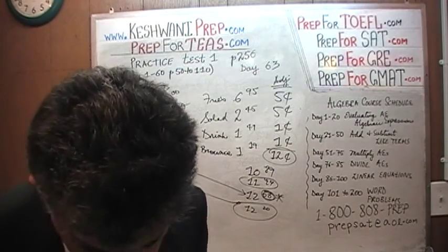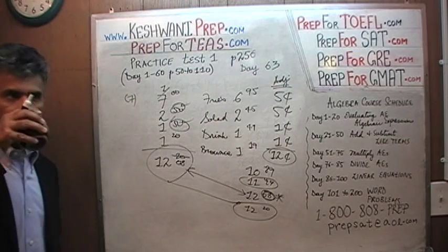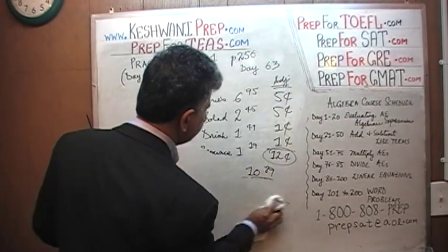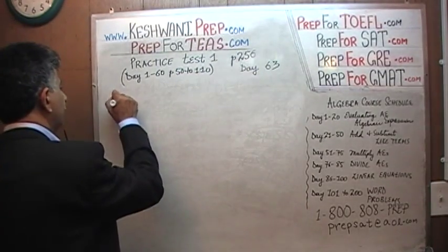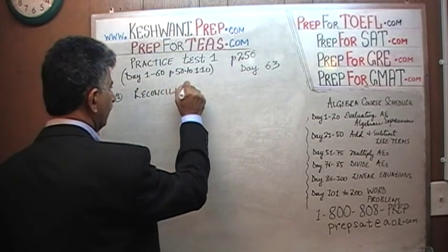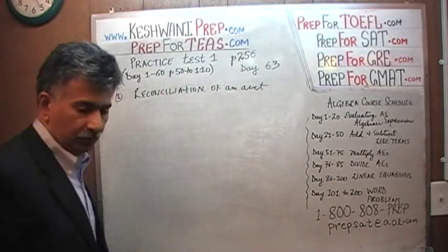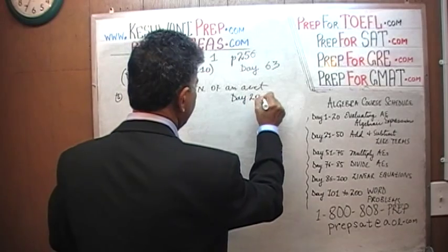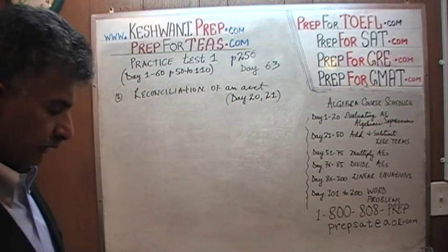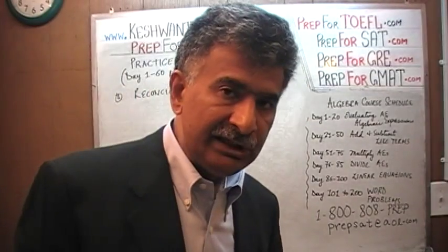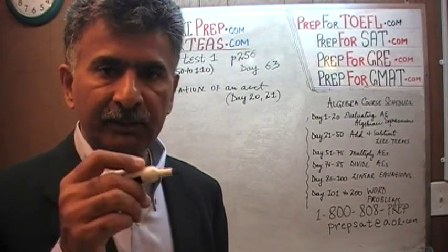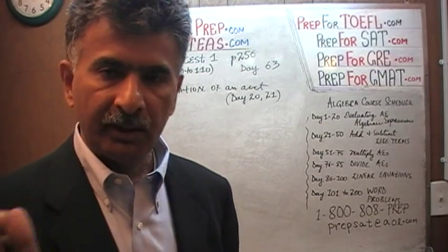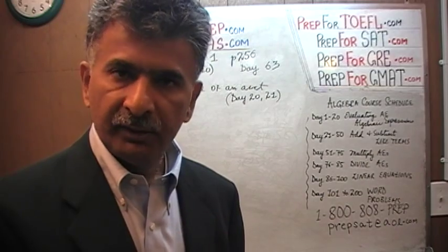That was number 7. Let's do number 8. In question number 8, we do what is known as reconciliation of an account, which we did before in the exercises. On day number 20 and day number 21, we did similar questions. When you're doing the reconciliation of an account, the most important part is to keep your debits and credits separate. Don't mix them up. Keep all your debits and all your credits separate — money coming into the account and money going out of the account — until the very end, then subtract total debits from total credits.